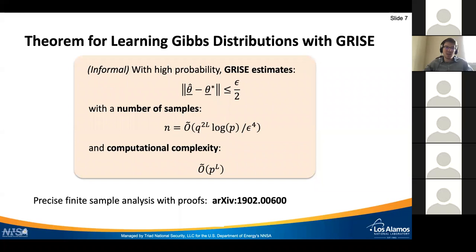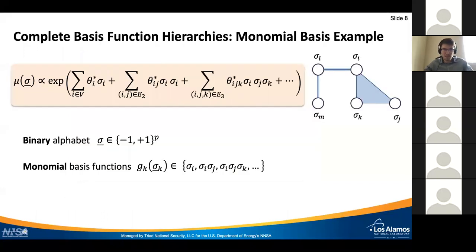And a factor which scales as q, the alphabet size, to the power L, where L is the maximum clique size in our factor graph. This can be done with computational complexity which is p to the L, so dimension of the problem to the power of maximum interaction order that we have in our model. So far I gave a very general statement, so let me give a concrete example.